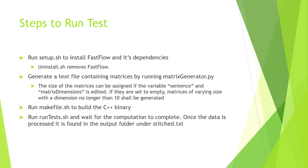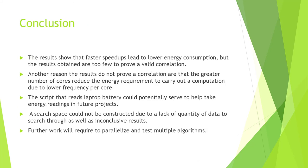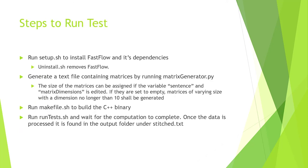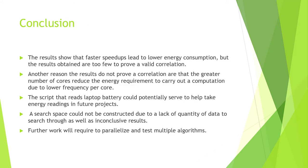In order to run the test, you need to run setup.sh to install Fastflow and its dependencies. In case you want to uninstall, there is a script for that. You can generate a text file with all the matrices by running matrixgenerator.py, and the size of the matrices can be assigned by editing the variable sentence and matrix dimensions. If you set it to an empty value, matrices of varying size with dimensions no longer than 10 will be generated. Then run makefile.sh to build the C++ binary, then run tests.sh and wait until computation is complete. Once the data is processed, it is found in the PyScript/output folder under stitch.txt.